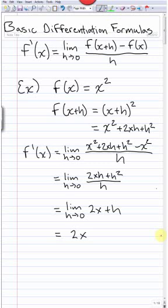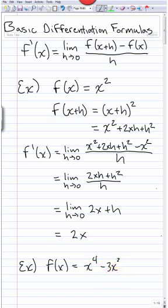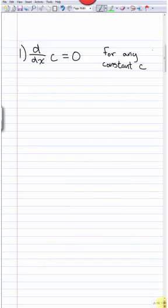Not horrible, but it still took us 6 steps to find this derivative. The differentiation formulas are going to allow us to take this derivative in one step. This is really important if we had a function like x⁴ − 3x³ + 7, which would take quite a few steps using the definition.